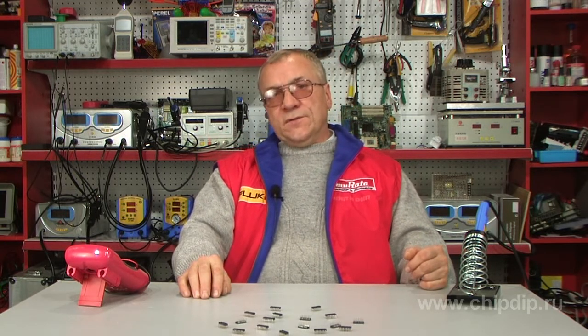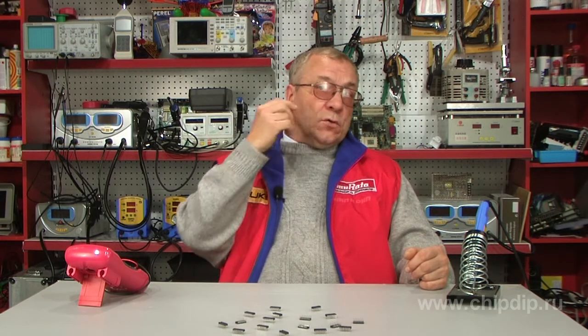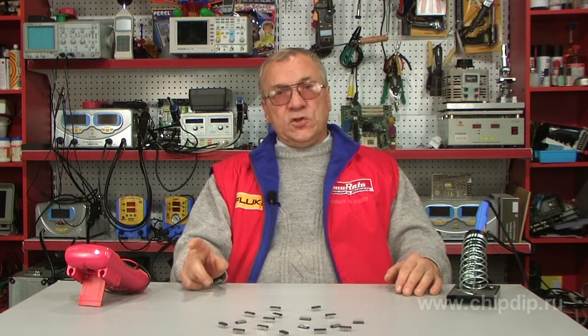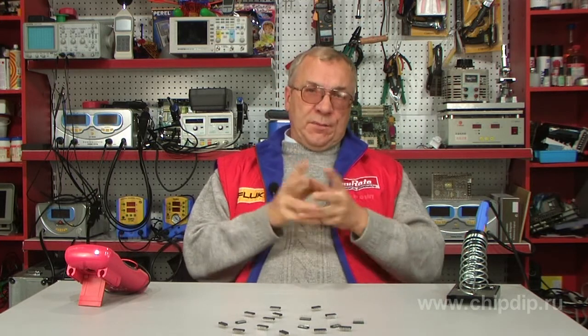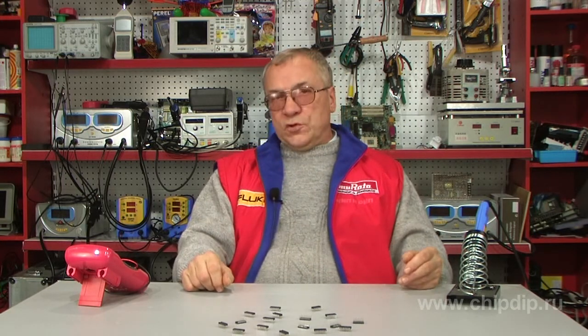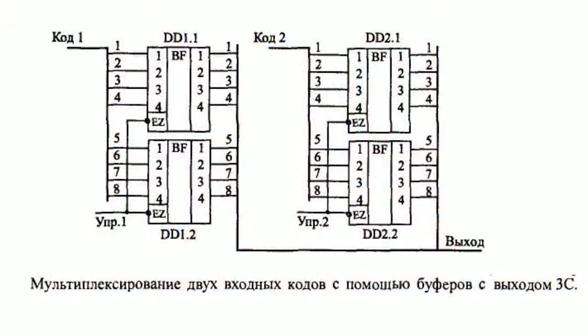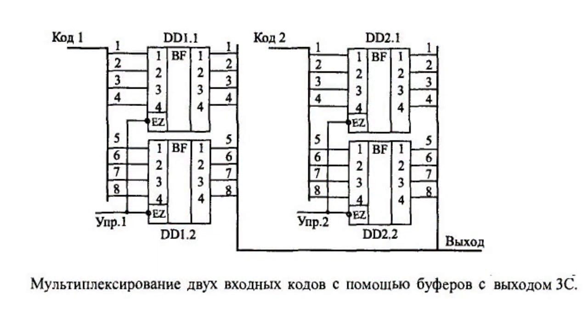It is often needed to process not single signals but groups of them — that is, signals that transfer multi-digit codes. In this case, it is convenient to use buffers with group control, those having one EZ-enabled input for several outputs. For these purposes, one can use AP5 microchips. Two of these chips enable multiplexing of two 8-digit codes, with homonymous outputs of both microchips connected.